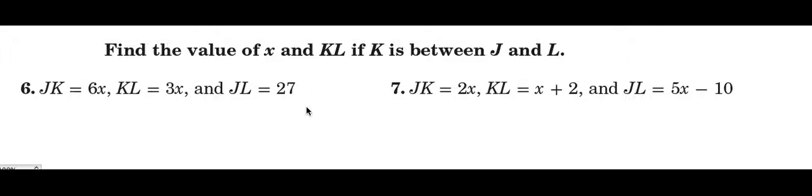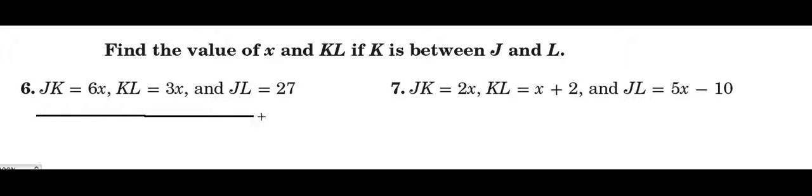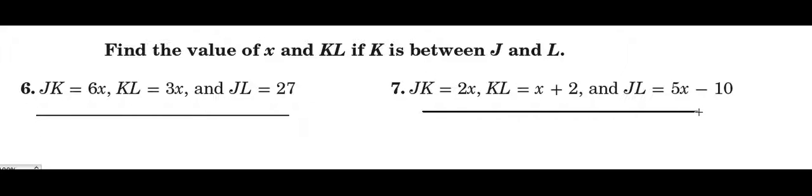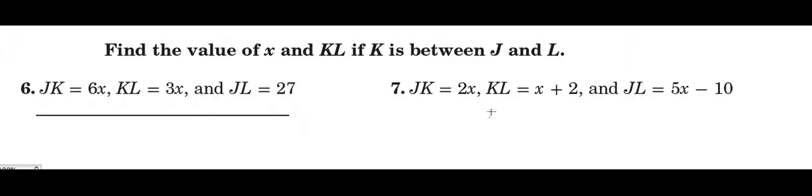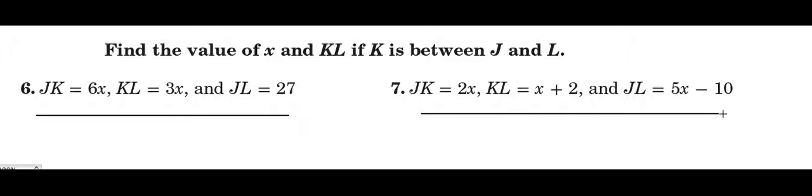Find the value of x and kl if k is between j and l. The first thing we want to do is make a line segment for each example, making sure that we label it correctly.